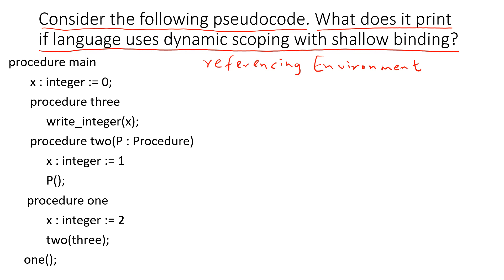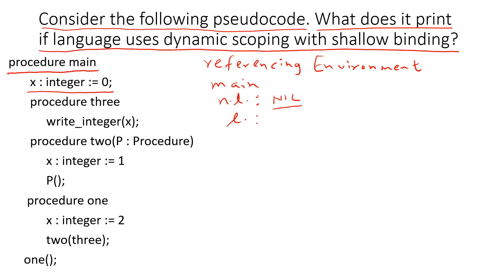Since it is dynamic scoping, we directly start the execution. The execution begins from main. As soon as you call a procedure, we create a referencing environment for that procedure. The referencing environment consists of a non-local compartment and a local compartment — NL stands for non-local, L stands for local. Main's non-local compartment is nil because main is not called by anyone; it is the first procedure called, so it does not have access to any non-local variables. But its local compartment has its own copy of x with value 0.